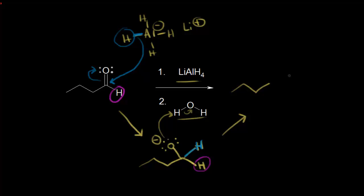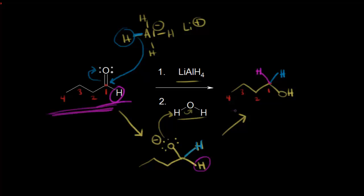So we would form this as our alcohol, with an OH. Let's count our carbons to make sure we did it right: one, two, three, and four carbons. We added this hydride onto here, and there was already a hydrogen on that carbon from our aldehyde. So going from an aldehyde and reducing it, we're going to form a primary alcohol — the carbon bonded to our OH is bonded to one other carbon. A reduction of an aldehyde using lithium aluminum hydride gives us a primary alcohol.